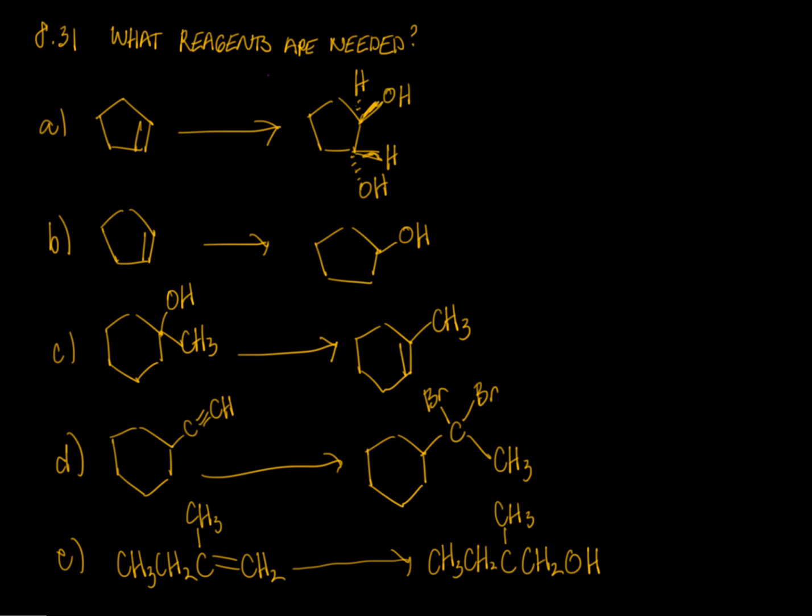Stoddard Tutoring here. We're looking at some problems from McMurray's 6th edition, chapter 8, number 31. We have some different molecules, different functional groups, alkenes, alcohol, and alkyne, and we're asked to indicate what reagents are needed to affect these different transformations.